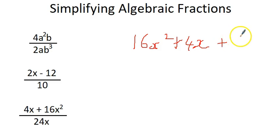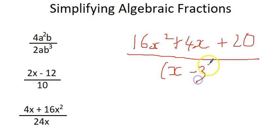So let's say it's 16x squared plus 4x and plus a number, I don't know, plus 20. And then that's divided by, and I don't know what, maybe it's bracket (x - 3), something like this. Now this is unlikely to simplify because I've just made it up.